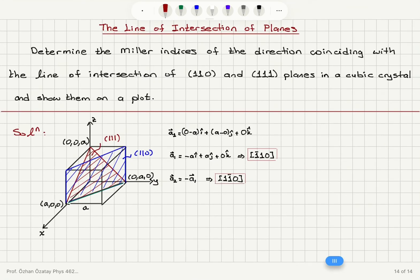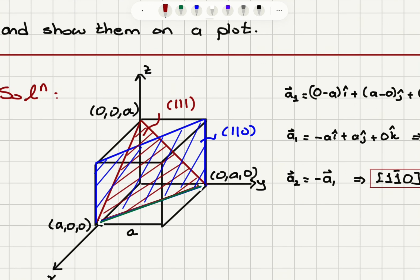In summary, we determined the direction coinciding with the intersection of (110) and (111) planes. We start by identifying the planes using their axis intercepts. The (111) plane intersects the x, y, and z axes at one lattice constant from the origin. The (110) plane does not intersect the z-axis — it meets it at infinity, giving a Miller index of 0. The line of intersection is the diagonal at the bottom face of the cube, and we identify two vectors pointing in opposite directions along this line.